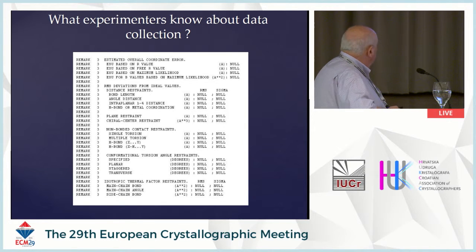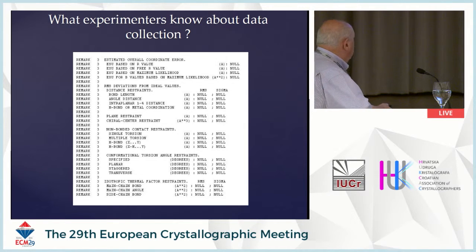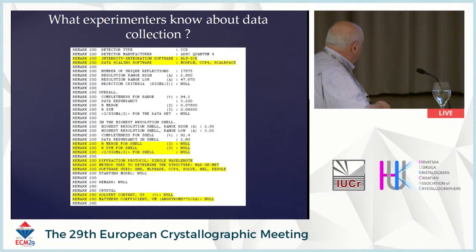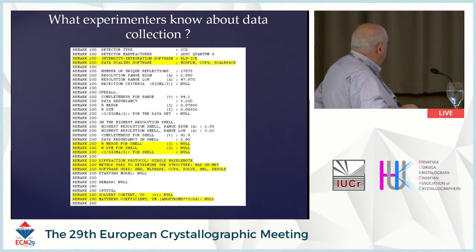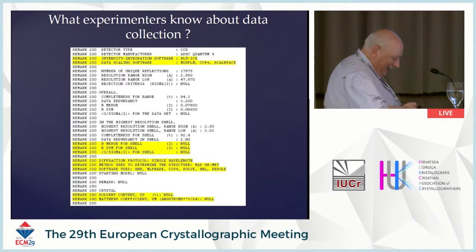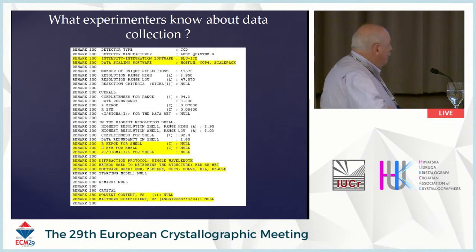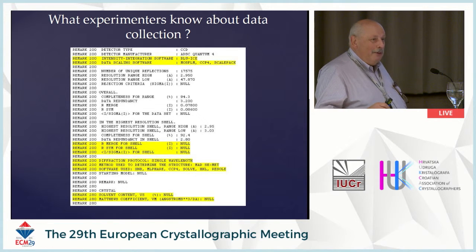The real question is: what does the experimenter know about data collection? As you see, very little. This is a real deposit from the PDB. Or you may have some numbers full of wrong information, because blue eyes cannot integrate data. R-merge — because of that we do not have R-merge, I may say. It was a single wavelength experiment, but it was multi-wavelength anomalous diffraction. The solvent content, obviously, was not known, despite the fact that we can easily recalculate it.